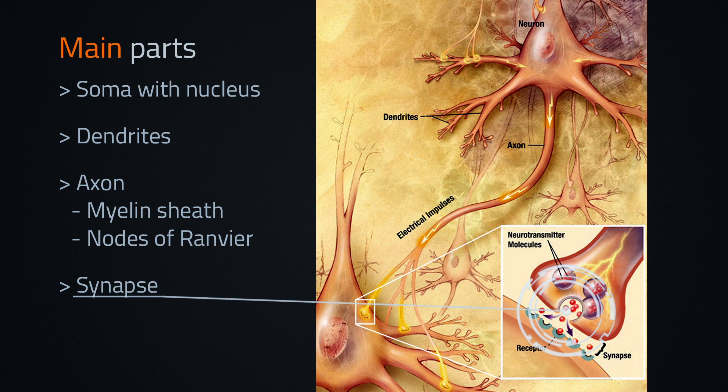The first neuron is called presynaptic and the second is called postsynaptic. There is a narrow space between the two neurons and it is called the synaptic cleft.